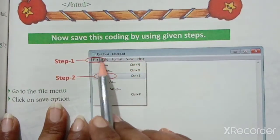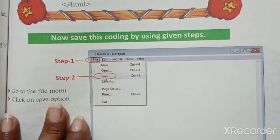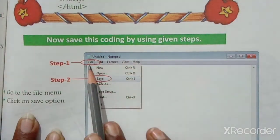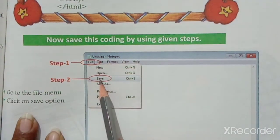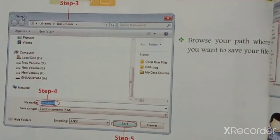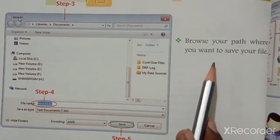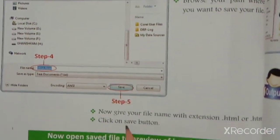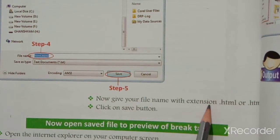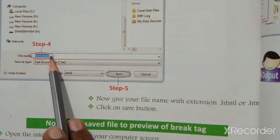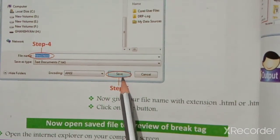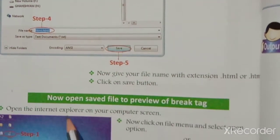Now save this coding: go to File in the Notepad window, then go to Save option. Give your file name with extension .htm or .html, and click the Save button. This way your document will be saved.